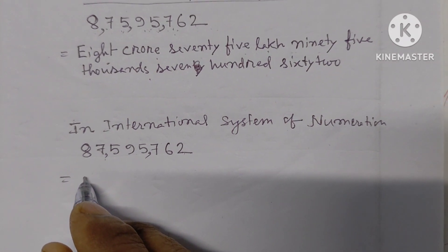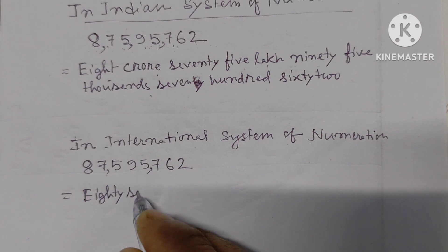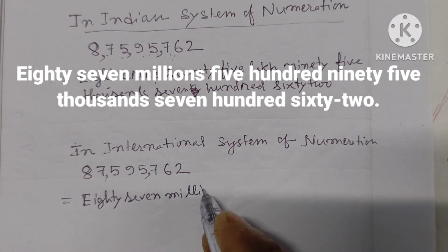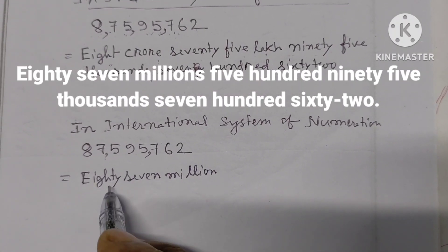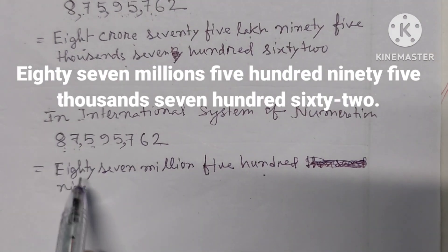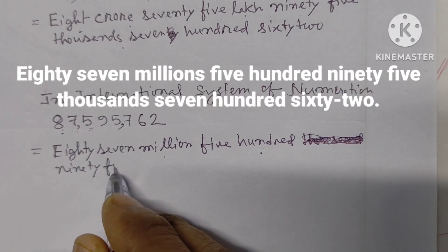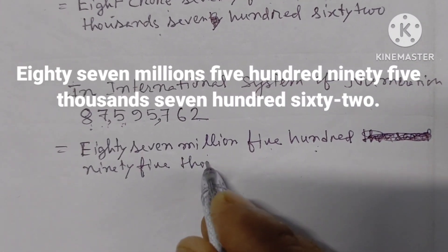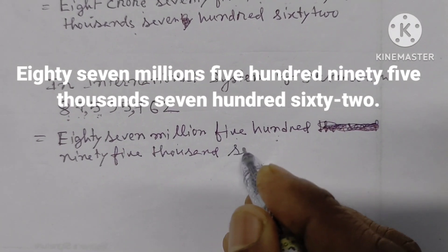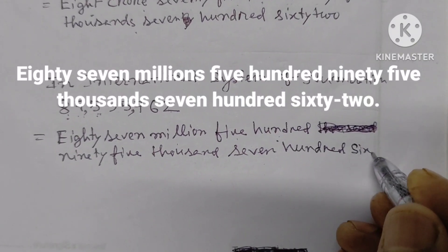Let us write 87,595,762. Eighty-seven million, five hundred ninety-five thousand, seven hundred sixty-two. That is: 87 — E-I-G-H-T-Y; 87,000,000 — M-I-L-L-I-O-N; 595 — F-I-V-E H-U-N-D-R-E-D; 1,000 — T-H-O-U-S-A-N-D; 762 — S-E-V-E-N H-U-N-D-R-E-D S-I-X-T-Y T-W-O.